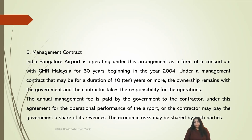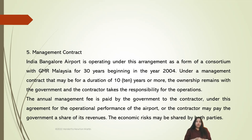The fifth model of privatization is the management contract. An example is India's Bangalore Airport, operating under this arrangement as a consortium with GMR Malaysia for 30 years beginning in 2004. Under a management contract — which may be for a duration of 10 years or more — the ownership remains with the government, and the contractor takes responsibility for operations. The annual management fee is paid by the government to the contractor, or the contractor may pay the government a share of its revenue. The economic risks may be shared by both parties, depending on how clearly that clause is adumbrated in the contract.